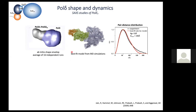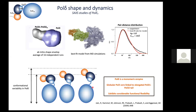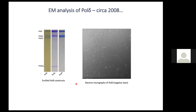Shown here is an average shape envelope from SAXS data for the holoenzyme, and in the middle panel is a rigid body model from MD simulations — both in qualitative agreement, showing a globular catalytic module attached to an elongated regulatory module. However, the distance distribution function calculated from the models deviates slightly at large distances from the experimental data, suggesting some flexibility. This explains why this is a challenging system for crystallization.